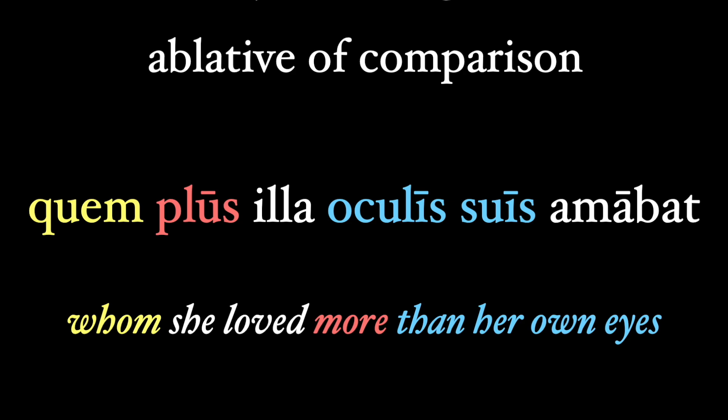Catullus describes his girlfriend's pet sparrow: 'quam plus illa oculis suis amabat' — whom she loved more than her own eyes. Here the comparison is between the sparrow, represented by the relative 'quam' in the accusative case, and Catullus's girlfriend's eyes. That's quite a lot of love for her pet.